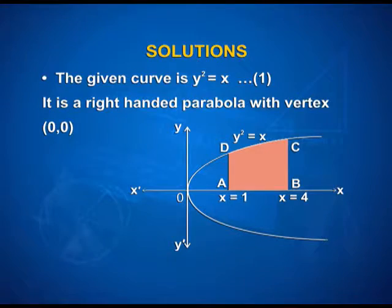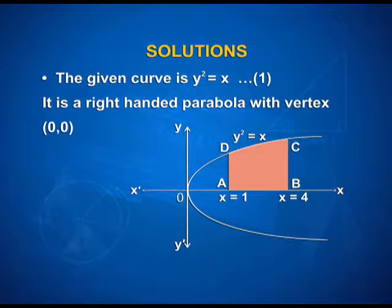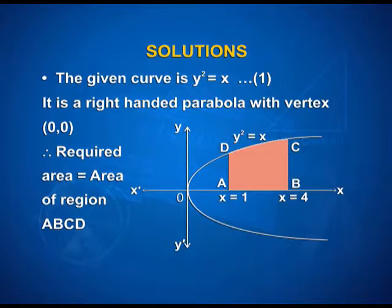Look into the solution to the first problem. The given curve is y squared is equal to x. It is a right-handed parabola with vertex at the origin (0, 0). Therefore, the required area is equal to the area of the region A, B, C, D.